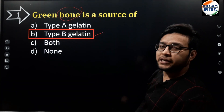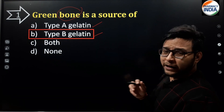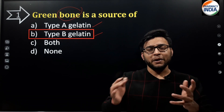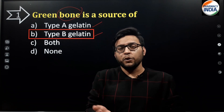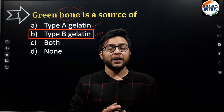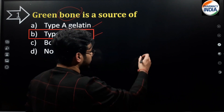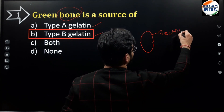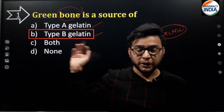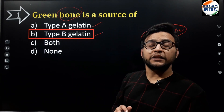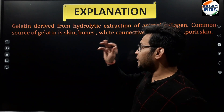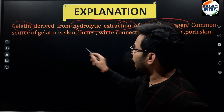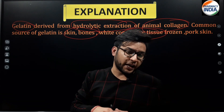Green bone is a source of Type B gelatin. Let's also understand Type A gelatin. Gelatin is mainly obtained by hydrolytic extraction from bone and pork skin. This gelatin is used to make the shell of capsules — the body and cap. The explanation confirms: gelatin comes from hydrolytic extraction of animal collagen, skin, bone, connective tissue, and pork skin.